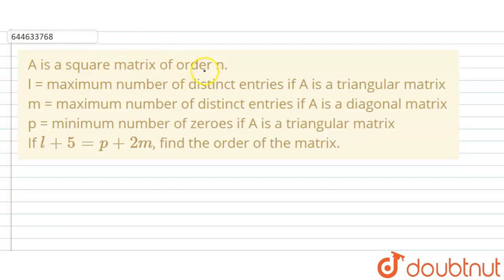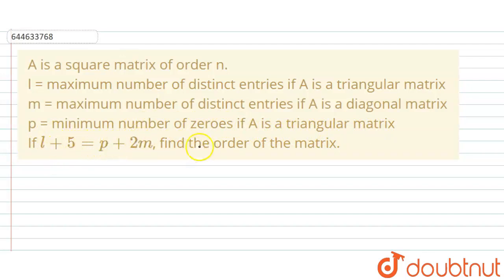Hello students. Today's question: A is a square matrix of order n. Here, l is equal to the maximum number of distinct entries if A is a triangular matrix, m is equal to the maximum number of distinct entries if A is a diagonal matrix, and p is equal to the minimum number of zeros if A is a triangular matrix.